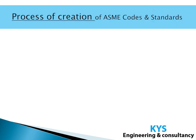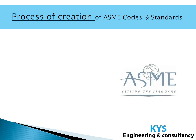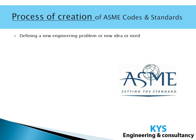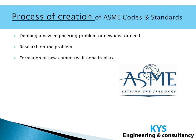Now let us see the process of creation of ASME codes and standards. First there is the defining process — defining a new engineering problem, new idea, or need. Then they research on the problem. They form a committee if there is none; if there is an existing committee, it goes to that committee. Then development of a standard is done, and after development an approval process takes place. It is approved and then published.